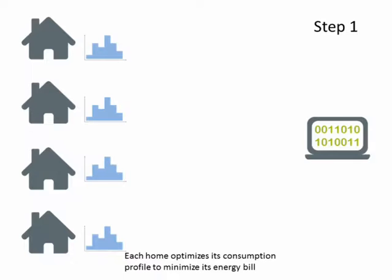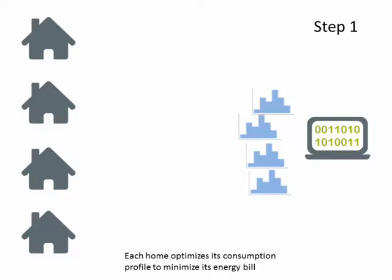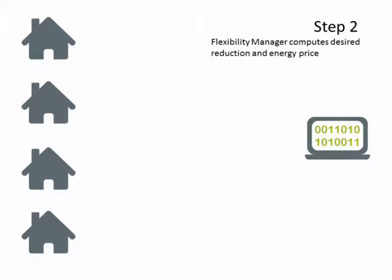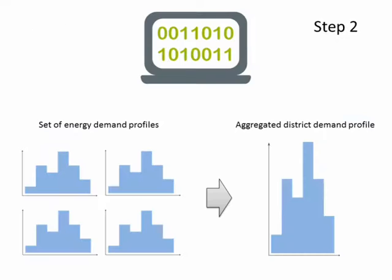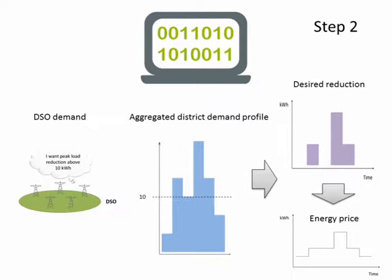At the end of step one, the flexibility manager receives the consumption profiles. In the second step, the flexibility manager computes and sends price signals to the smart homes. It first computes the aggregated profile of the district. Then, taking into account the DSO needs, it drafts the desired reduction and the economic signal, the price of electricity, used as an incentive for the house to participate in the scheme.